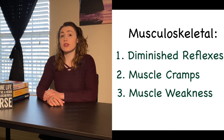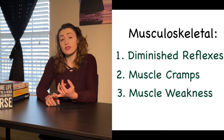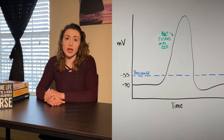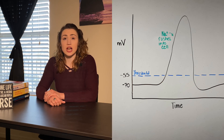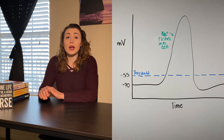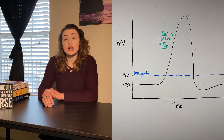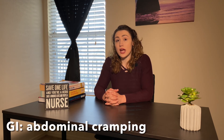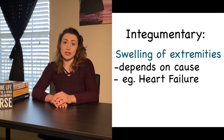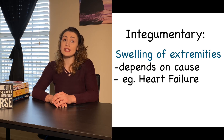For musculoskeletal symptoms, we see diminished deep tendon reflexes, muscle cramps, and muscle weakness. Since the flow of sodium across a cell membrane drives depolarization and action potentials, low sodium means sodium cannot flow as quickly into a cell to cause contraction, manifesting as muscle weakness. In the GI tract, musculoskeletal abnormalities result in abdominal cramping. In the integumentary system, patients can have swelling of the extremities due to fluid shifting into cells and interstitial spaces.